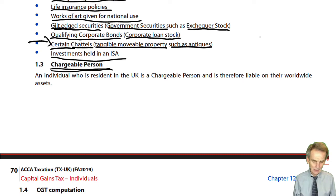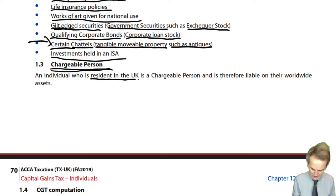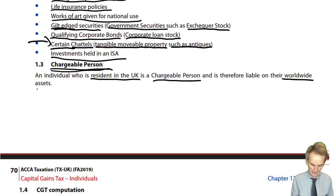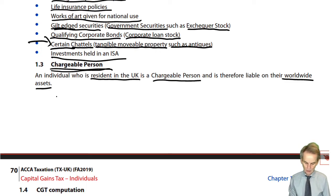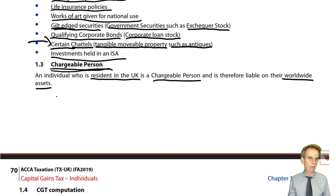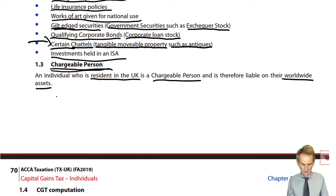Chargeable person: going back to a term from Chapter 2, an individual who is resident in the UK is a chargeable person and is therefore liable on their worldwide assets. This is a basic definition for Tax UK. If you have satisfied the tests of UK residence — the same tests used for income tax purposes — then that individual is a chargeable person.